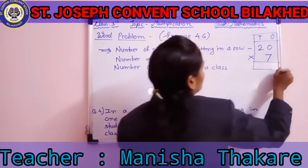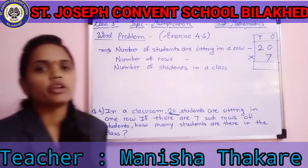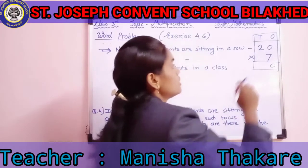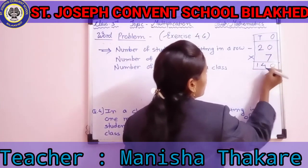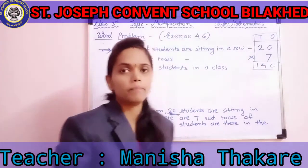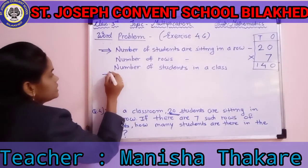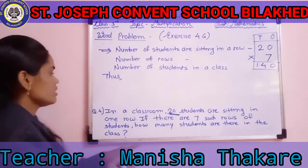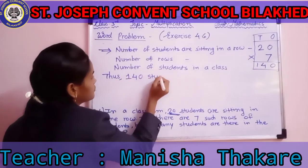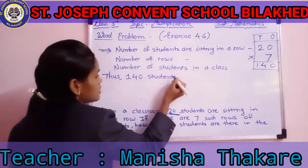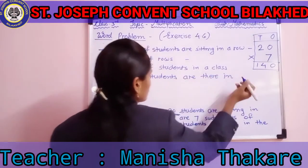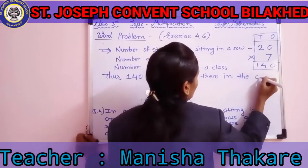Now we do the multiplication. You have already learned the 7 times table. 7 zeros are 0, so we write 0. 7 twos are 14, so we write 1 4. We get the product 140. Our final line is: thus, there are 140 students in the class.